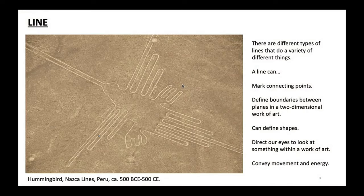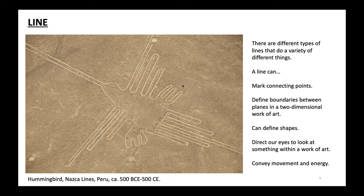Let's begin with line. Line is the most basic way that any particularly two-dimensional form is created. This is something that we all do — if we think about writing, if you still handwrite words, you are using line to communicate ideas. Same thing with art. It begins with line. And there are different types of lines that do a variety of different things. It's a very powerful tool in the artist's wheelhouse.